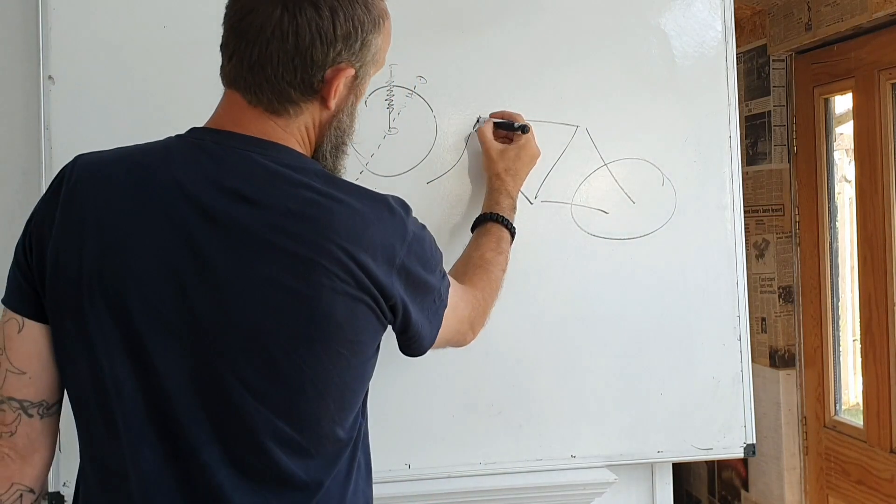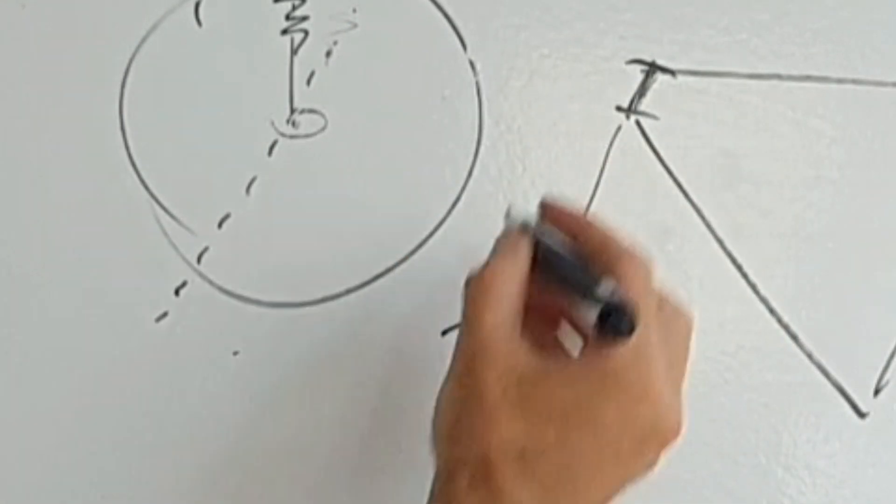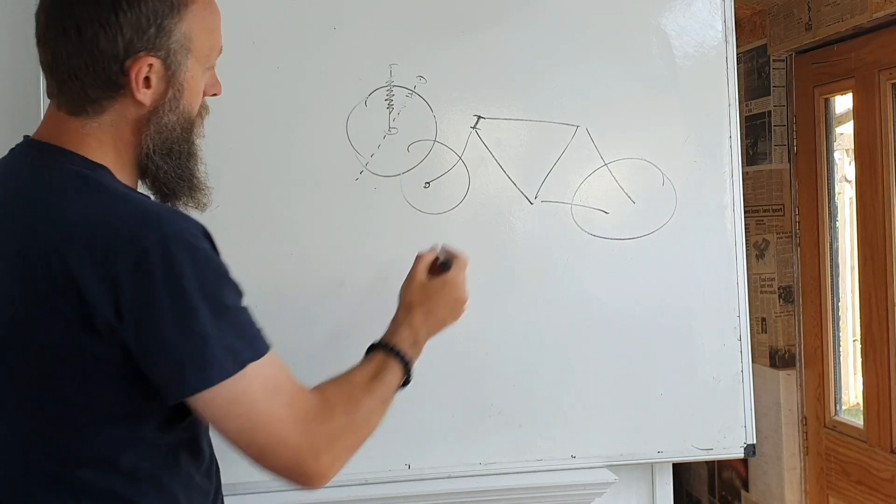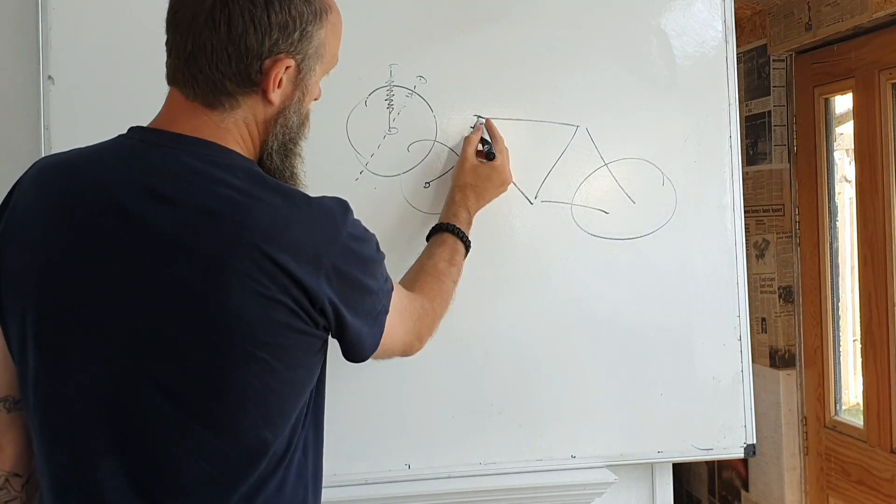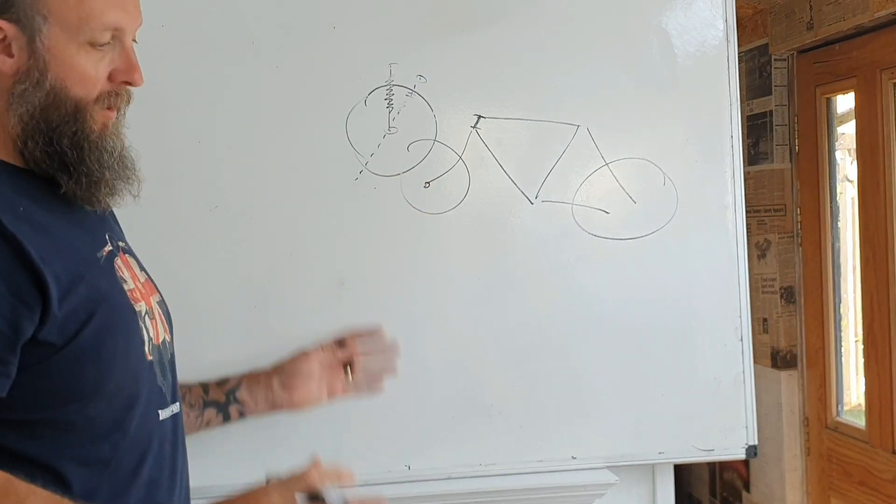Now, I'm exaggerating here obviously, but your headset here isn't vertical. Your forks normally have a rake on them where your wheel attaches. Now, that's because, same principle. If you had that directly vertical and your fork directly vertical, the bike will wobble right over the place.